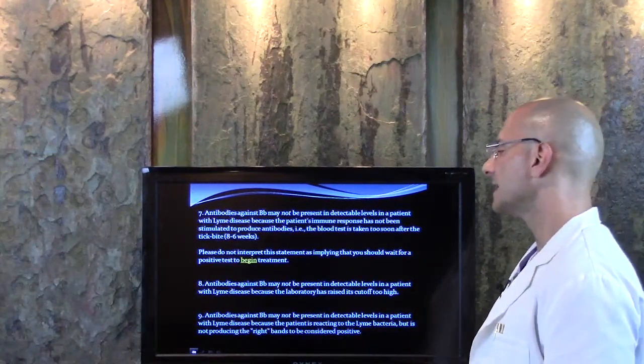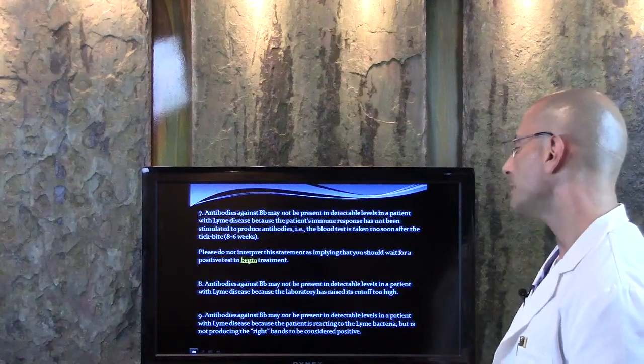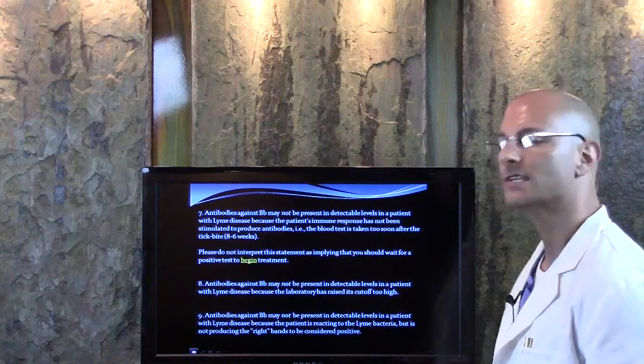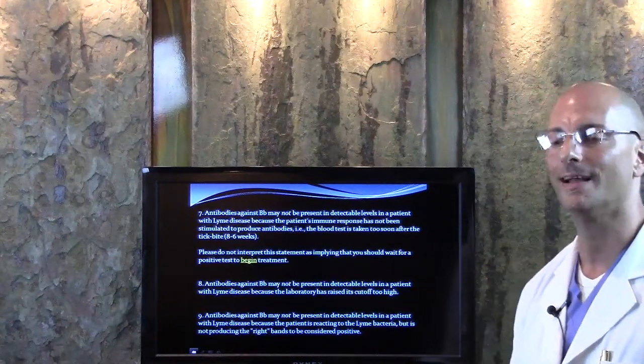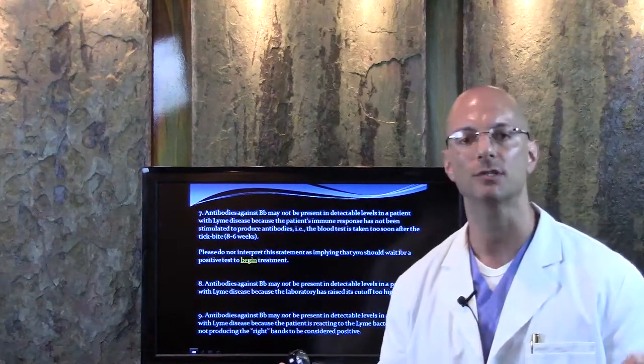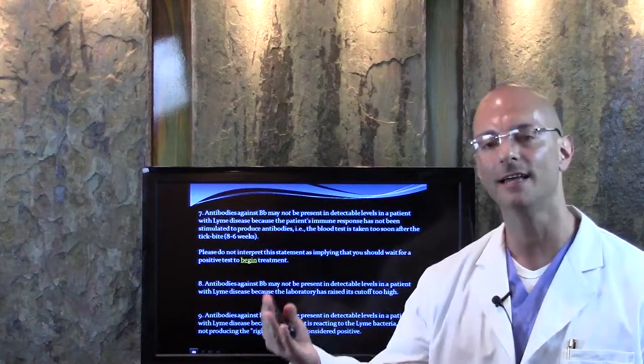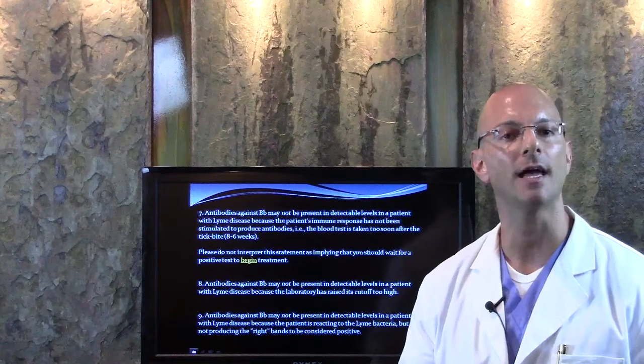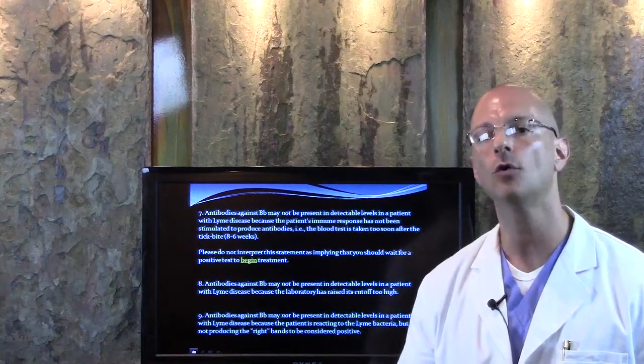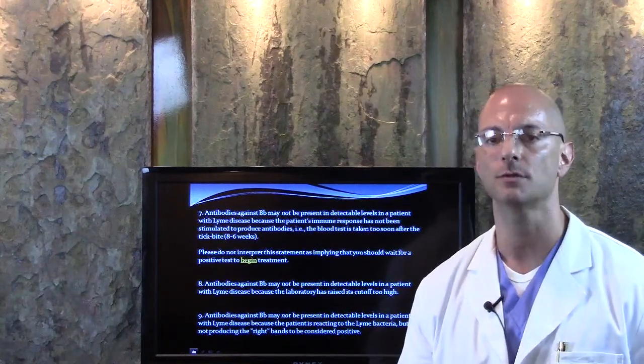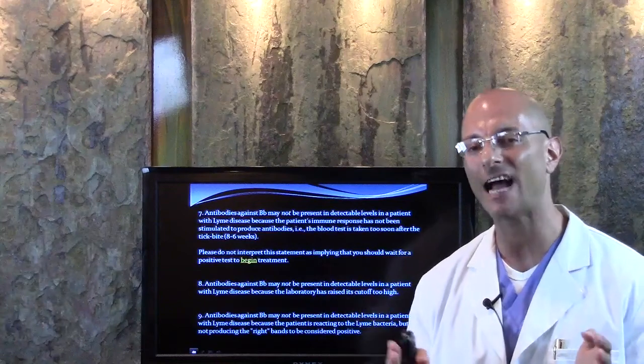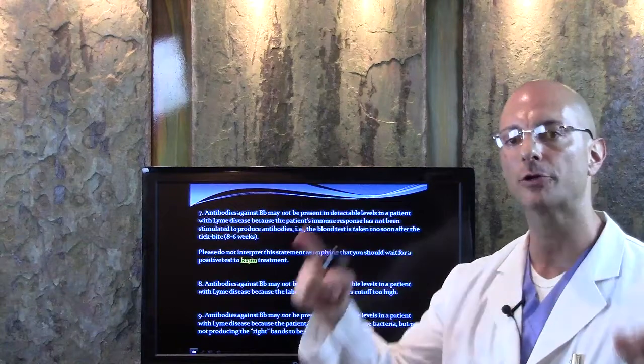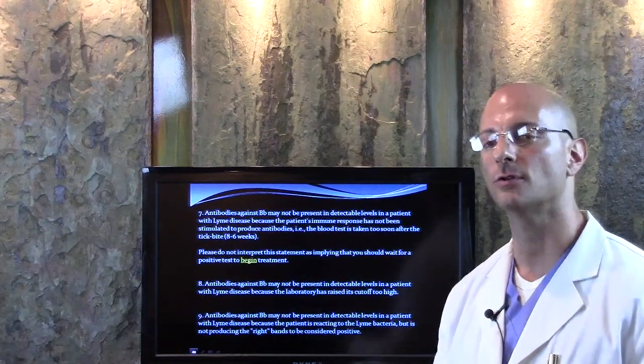Number eight, antibodies against Borrelia burgdorferi may not be present in detectable levels in a patient with Lyme because the laboratory has raised its cutoff level too high. So when you look at a lab's ranges of low to high, one to ten, let's say, if the ten is too high and it really shows up as a nine, well, that lab is just using their own ranges. They're making up their own numbers. So we've got to use a very tight, narrow range when it comes to what that lab is really reading, as opposed to what they're creating as a bell curve of who has the infection or not.